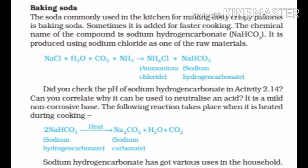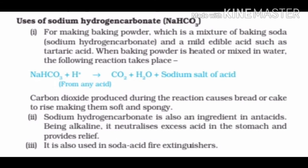On heating sodium hydrogen carbonate, it produces sodium carbonate, water, and carbon dioxide. When we add a weak acid to sodium hydrogen carbonate, it produces the salt of the acid and carbon dioxide is released. The mixture of sodium bicarbonate and a mild edible acid is called baking powder. Carbon dioxide produced during the reaction causes bread or cake to rise, making them soft and spongy. It is also used as an antacid and in soda-acid fire extinguishers.